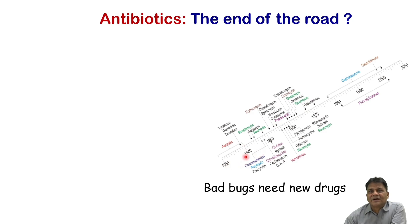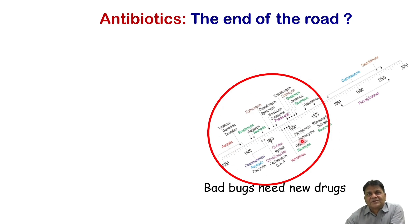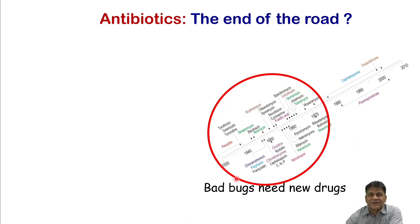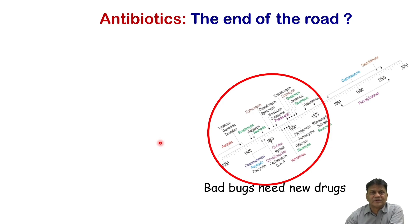Starting from 1930, penicillin was introduced and the majority of newer molecules were invented before 1980 — those 40 years were very productive. The invention of antibiotics added 10 years to human life expectancy. However, due to indiscriminate use, antibiotic resistance developed. After 1980, only a few new molecules have been added, and it takes around 20 years to introduce a new molecule to clinical practice due to all the preclinical and clinical trial stages required.